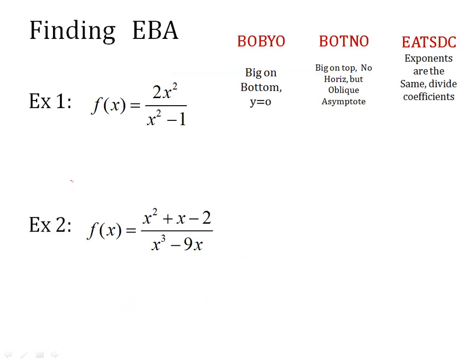Here's your little cheat sheet. So looking at my equation, I'm looking at just the end behavior asymptotes. That's what EBA stands for. So I look at the degree of the top is a 2 on this one. The degree of the bottom is a 2. What's the highest power of x, basically? Since it's a 2 over a 2, then it's an EATSDC. Exponents are the same. So I divide the coefficients. Well, what's the coefficient of the top? It's 2. What's the coefficient of x squared on the bottom? That's a 1. So my answer is y equals 2. And it's a horizontal.